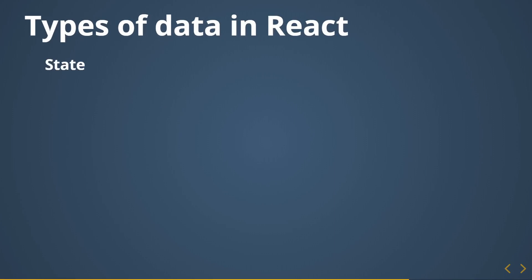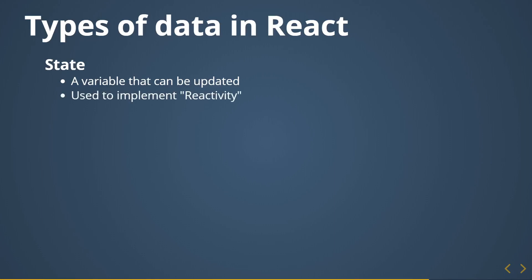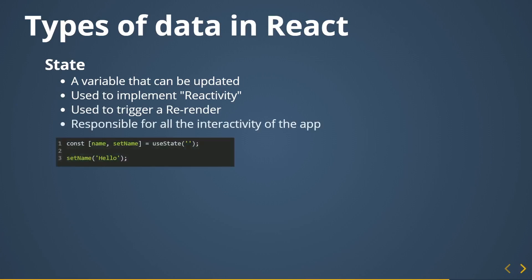Next is state, which is extremely important — it defines the reactivity in React. Think of state as a variable that can be updated and will trigger a re-render of your whole app. This is the most powerful point about React and what defines its reactivity. It's responsible for all interactivity in your apps. This is how you define state nowadays using hooks — with destructuring: 'const [name, setName] = useState(initialValue)'.